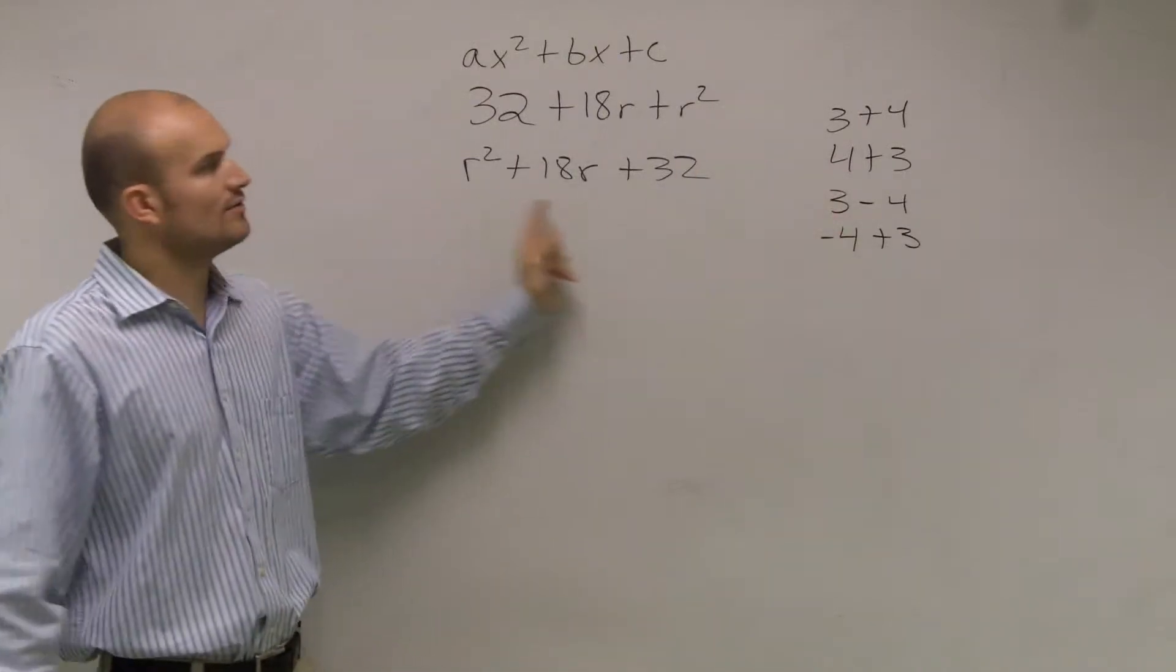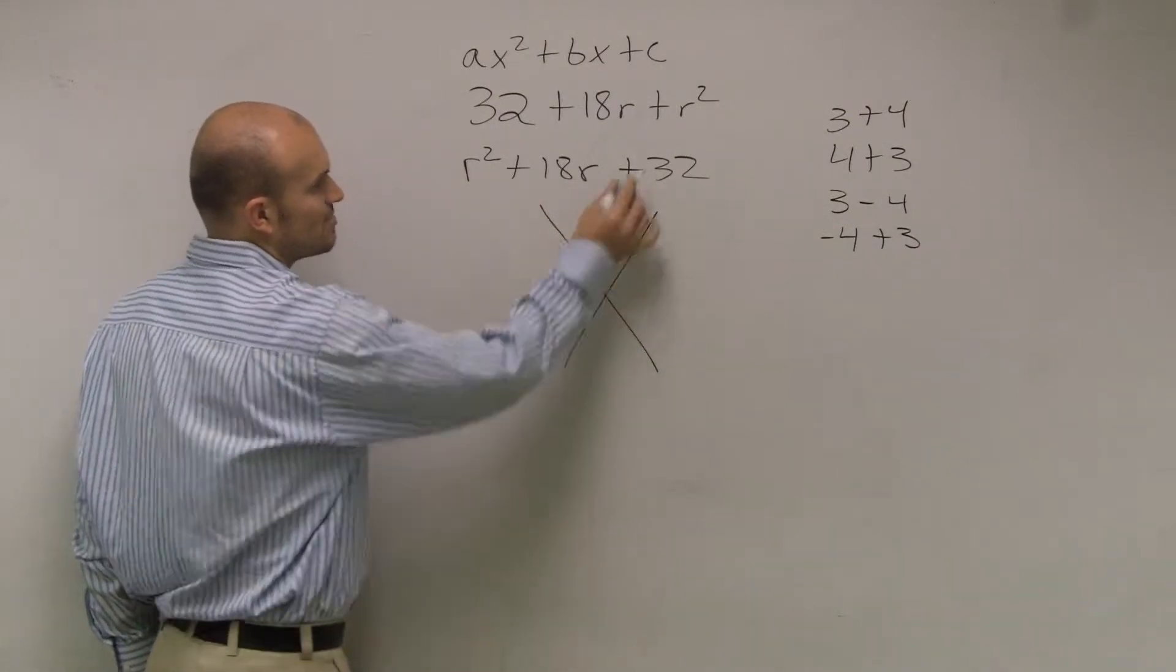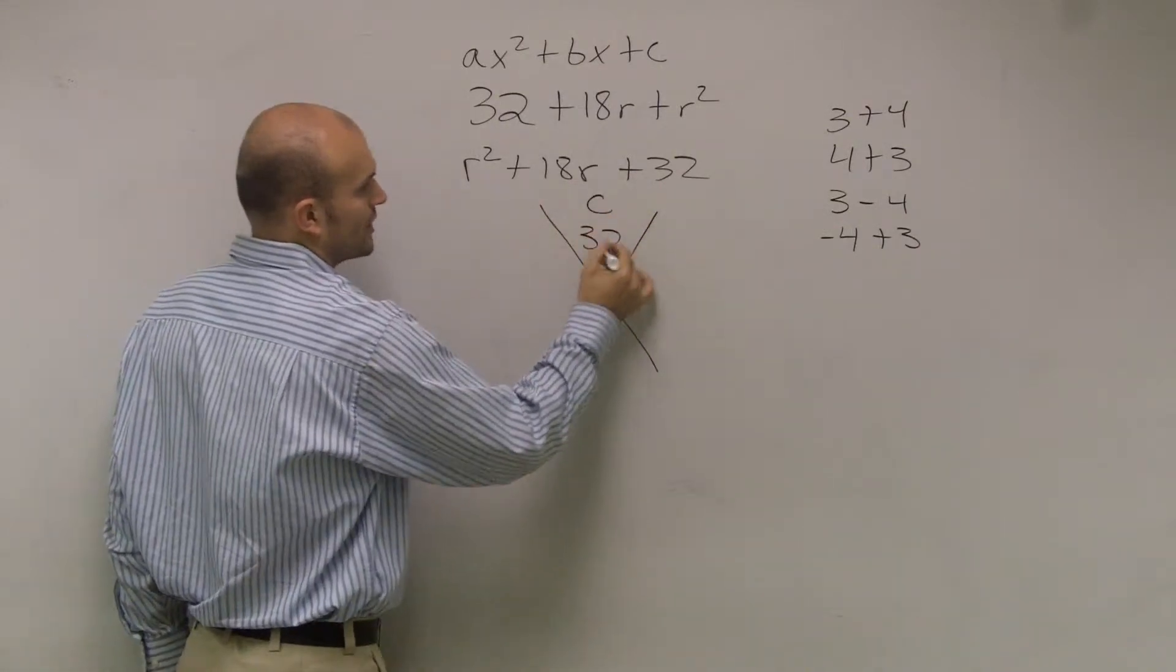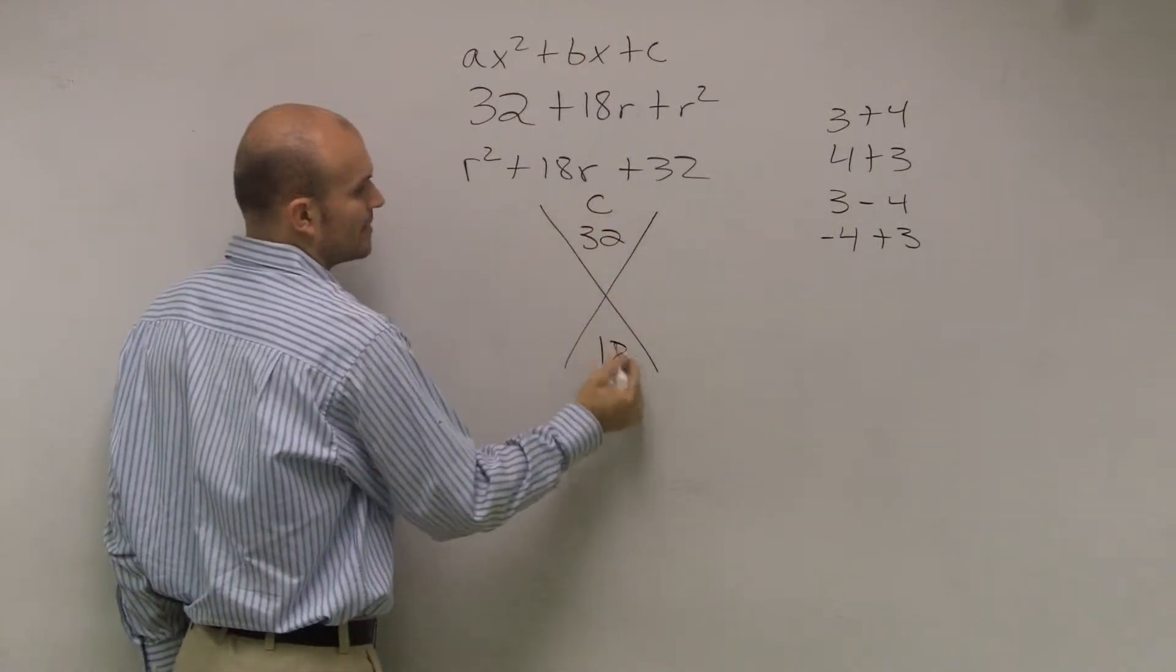So what we want to do is we want to rearrange it, so now it's in standard form. Now it's very easy for me to distinguish my c, which is 32, and my b, which is 18.